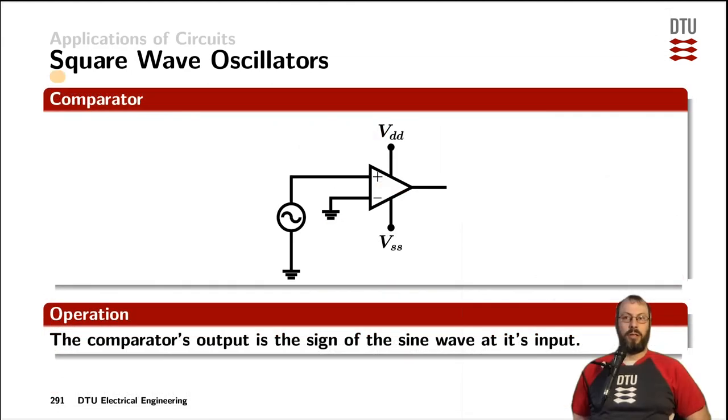Another way of generating a square wave is simply using one of the sine wave oscillators, here modeled by a sine wave source, and feed them into a comparator at the non-inverting input of the comparator. Compare the signal to the average of that sine wave, and therefore the output of the comparator would be the sign of that sine wave, typically oscillating between the supply voltages of that comparator.